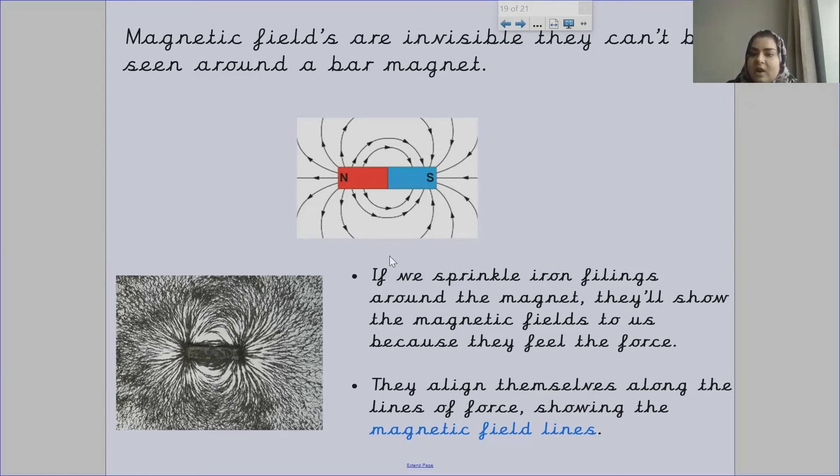If we sprinkle iron filings around the magnet, they'll show the magnetic fields to us because they feel the force. For example, if I was to have a bar magnet in front of me and I sprinkled all these iron filings around it, they will start shaping themselves in a way. They'll start shaping themselves around the magnetic fields to show you where the magnetic fields are.